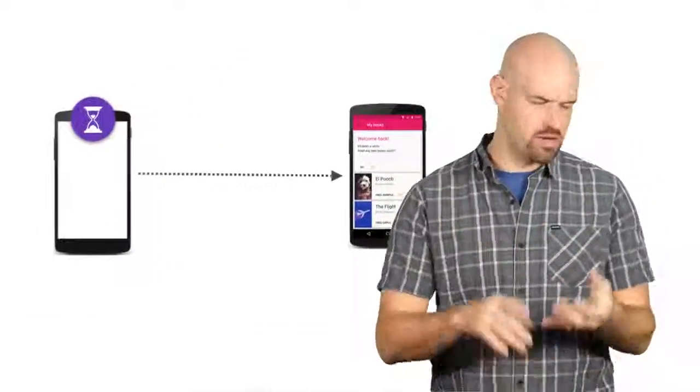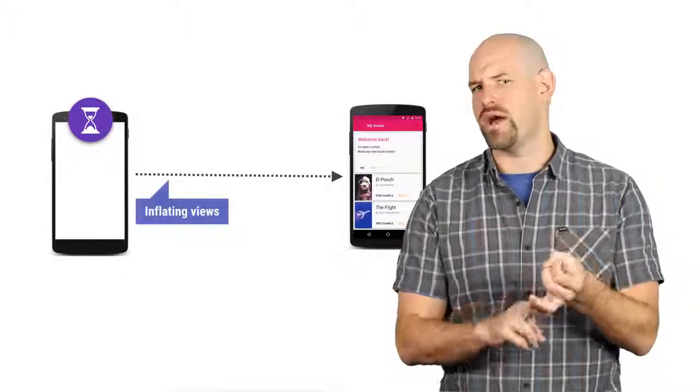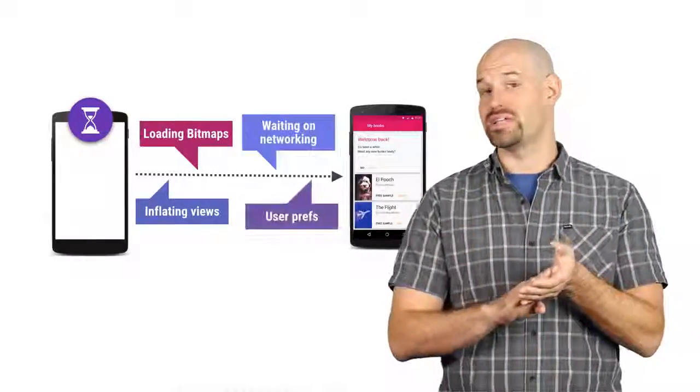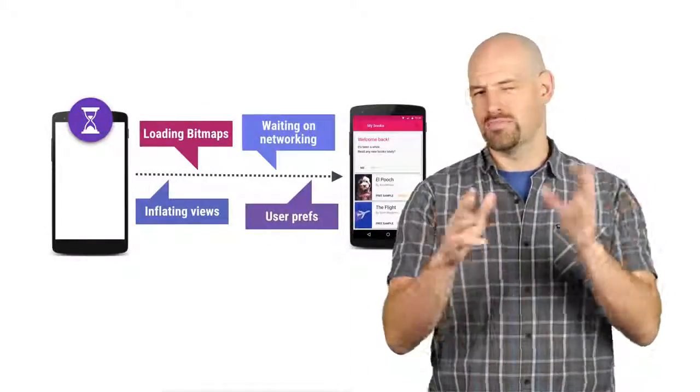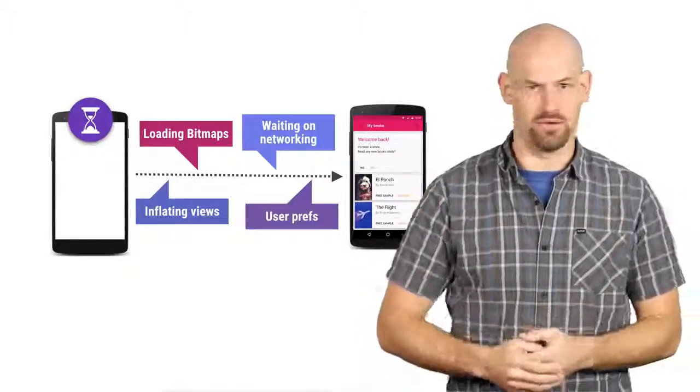I mean, a bunch of stuff happens here. You're setting the theme data, inflating view hierarchies, loading bitmaps, deserializing network fetches, writing user preferences, all the stuff you need to display your activity.